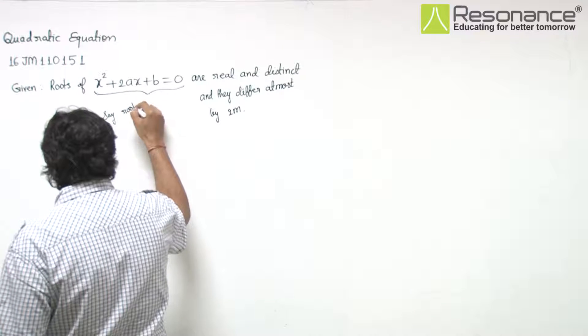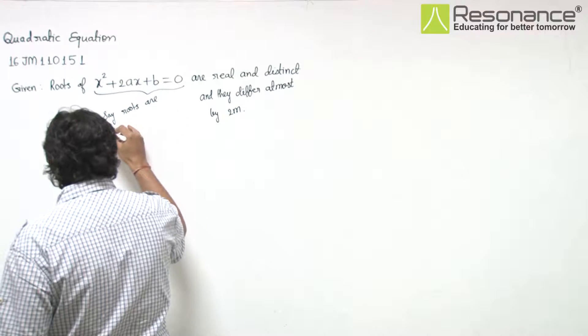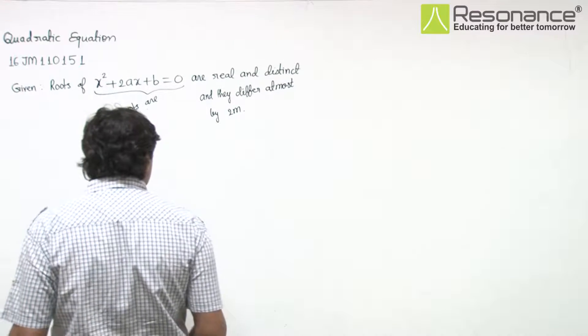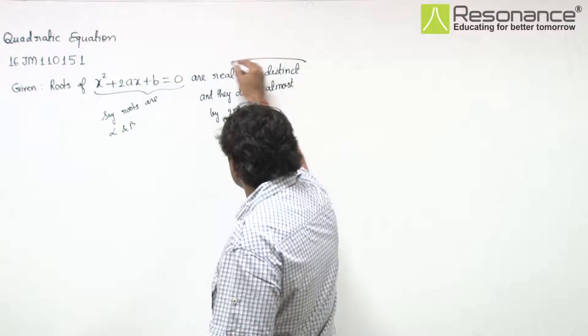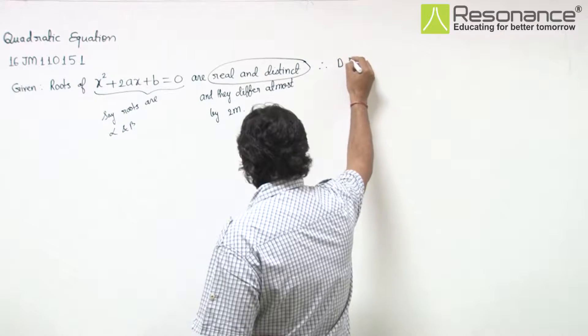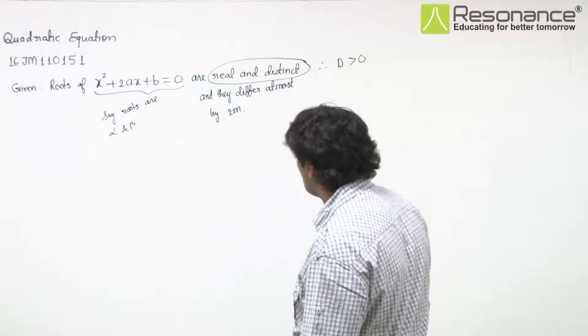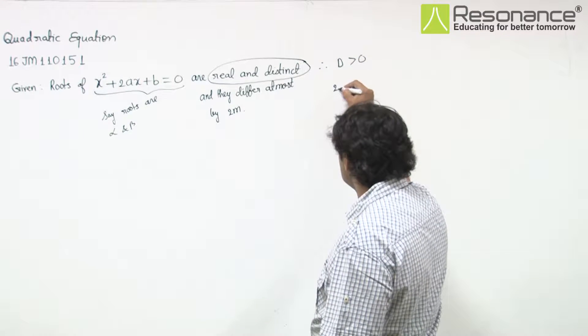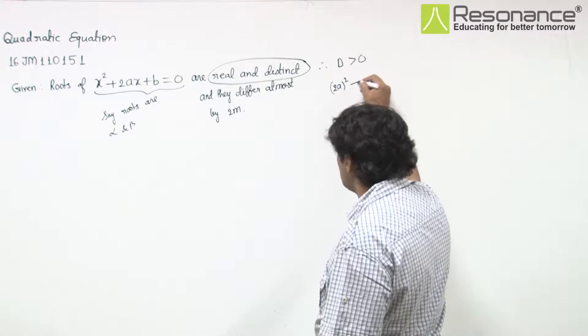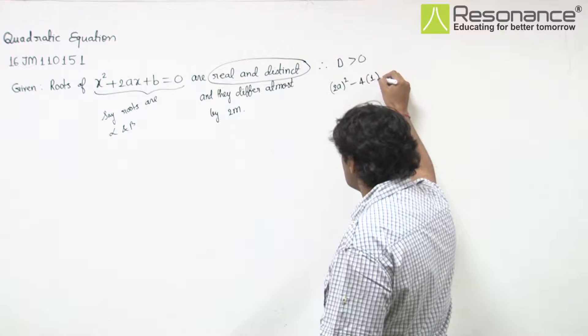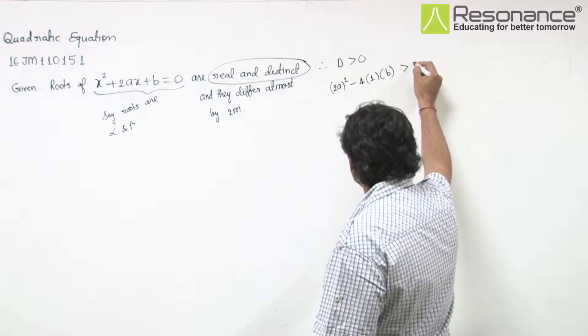Say roots are α and β. Roots are real and distinct, that means the discriminant should be greater than 0. So the discriminant (2a)² - 4(1)(b) > 0.